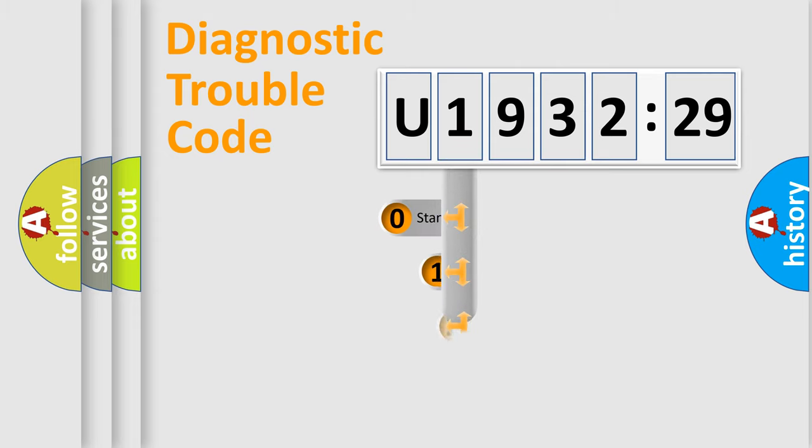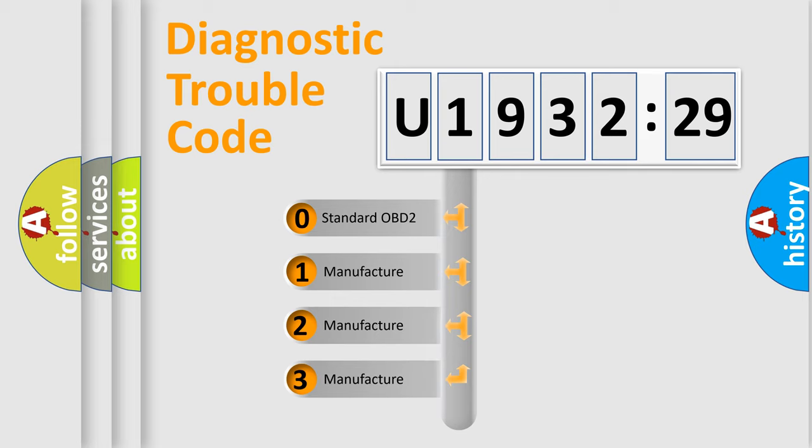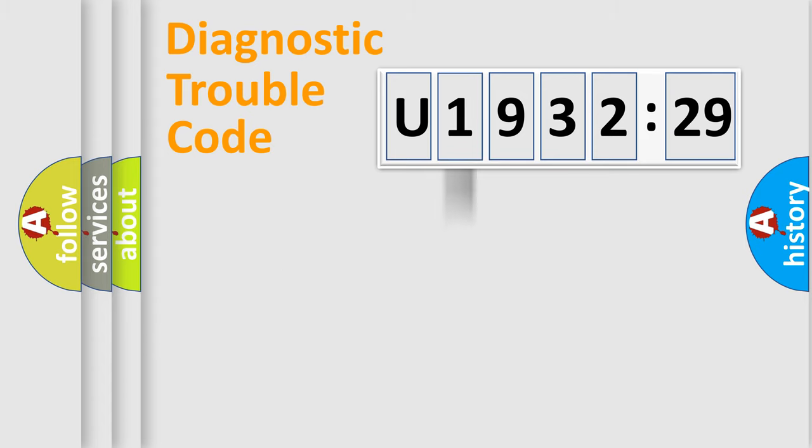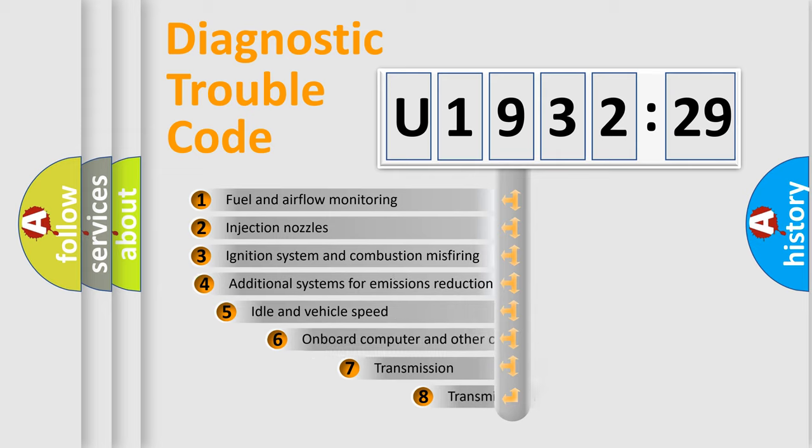This distribution is defined in the first character code. If the second character is expressed as zero, it is a standardized error. In the case of numbers 1, 2, or 3, it is a more prestigious expression of the car-specific error.